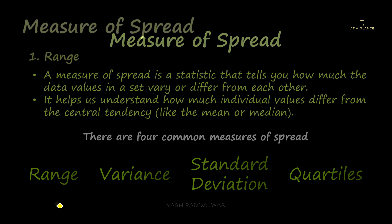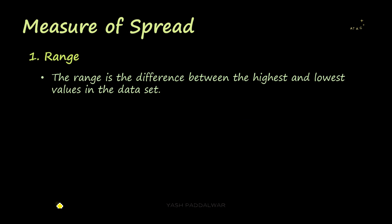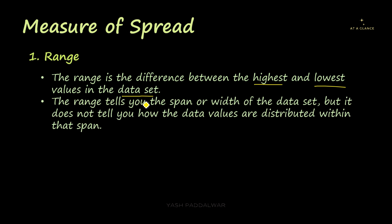Range is a very simple measure of spread. The range is the difference between the highest and the lowest values in the data set. The range tells you the span or width of the data set — that means over what values the data set is actually varying, how much it is spread. But it does not tell you how the data values are distributed within that span.